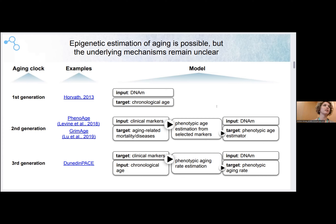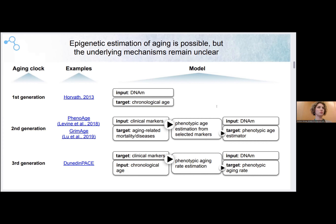There are aging clocks that work very well and predict very well the chronological aging, mainly based on DNA methylation data. But why they are so great in predictions, we still don't know.